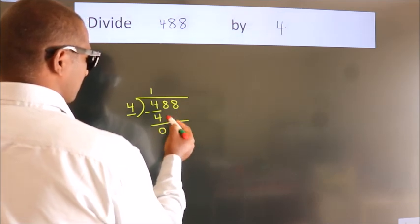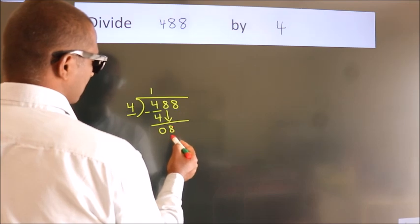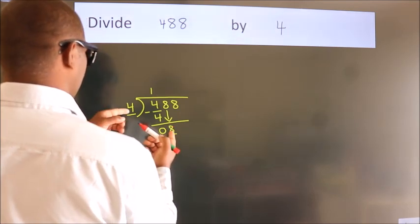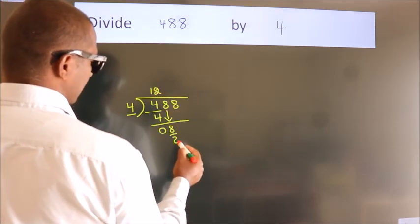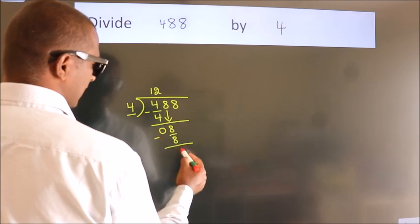After this, bring down the beside number. So 8 down. When do we get 8? In the 4 table. 4 twos are 8. Now we subtract. We get 0.